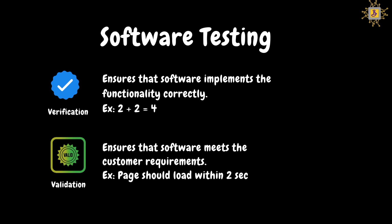Validation means checking whether the software meets the customer's expectations. For example, if we open the application, different pages should load within two seconds. By software testing, we make sure our application loads within those 2 seconds — that is validation.